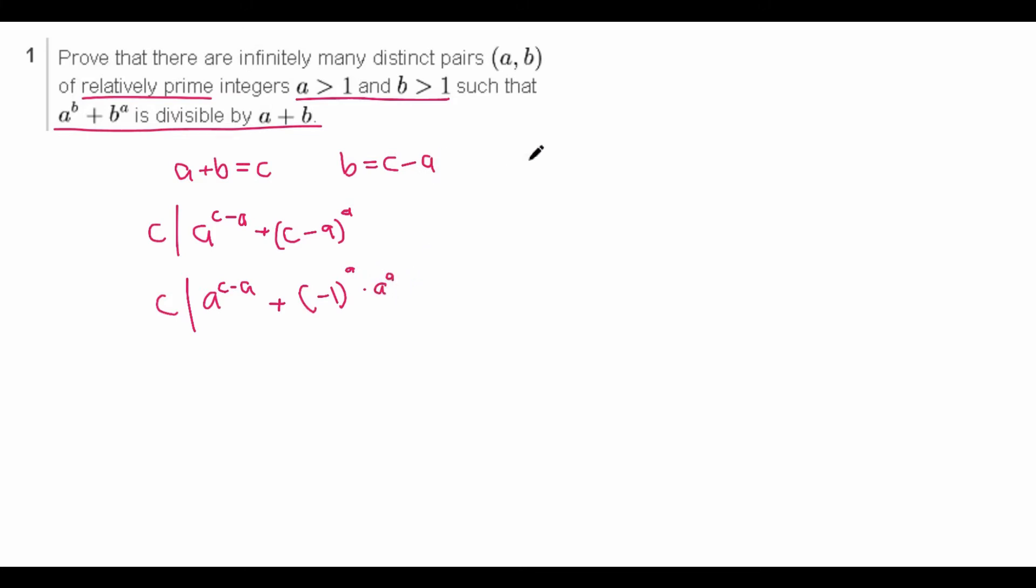And since we know that the gcd of a and b is one, then it follows that the gcd of a and a+b is also one. In other words, a and c. So that means that we can safely divide both sides here by a^a. Assuming that, of course, c - a is greater than or equal to a, which we can do because we can, without loss of generality, assume that a is less than or equal to b.